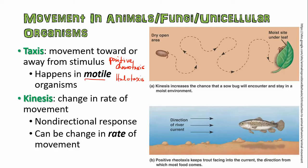Most fungi aren't capable of physically moving their whole selves towards something, but they can grow towards something. There are some slime molds that can actually move around. Kinesis is usually the change in the rate of movement — it's non-directional and not necessarily towards or away from something; it's a little random. As seen in the pill bug example, that bug is just wandering around randomly until it hits something ideal, like a nice moist shaded site. The fish at the bottom is exhibiting positive taxis — specifically positive rheotaxis — meaning the trout is always swimming upstream so that food will come towards it.